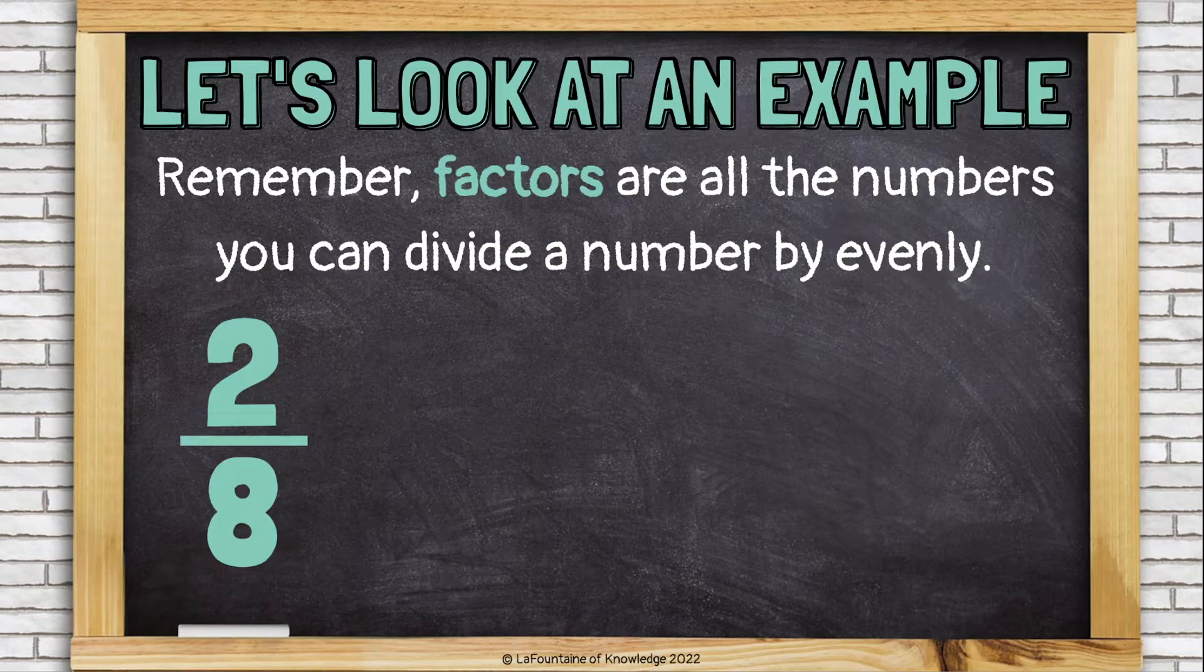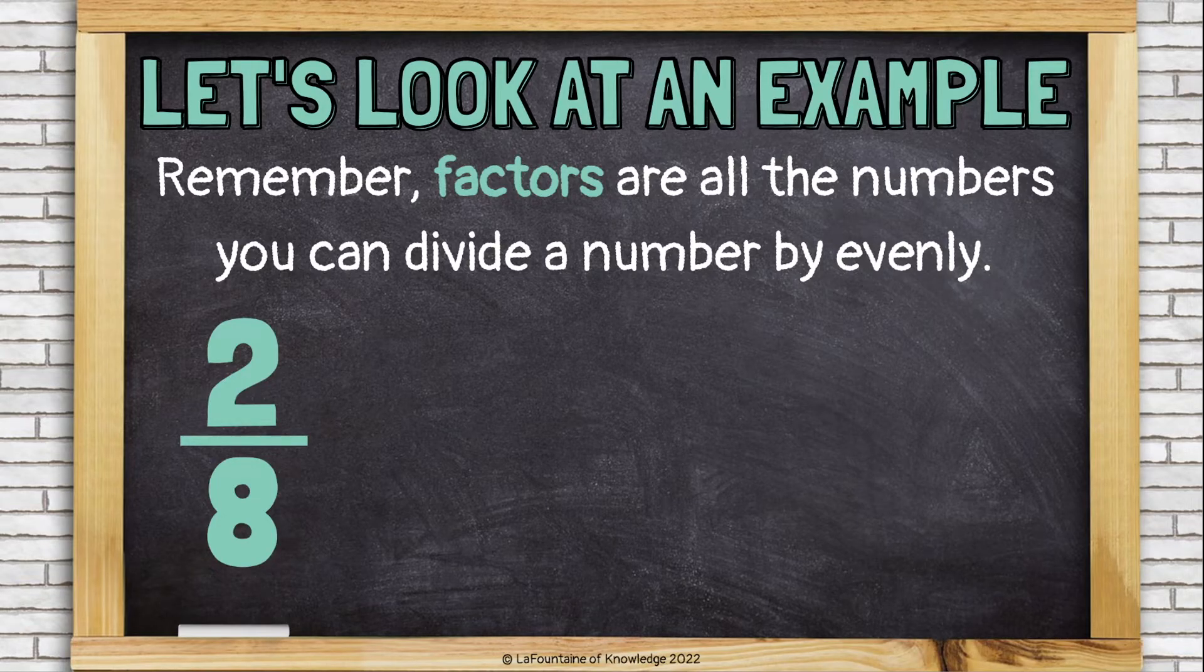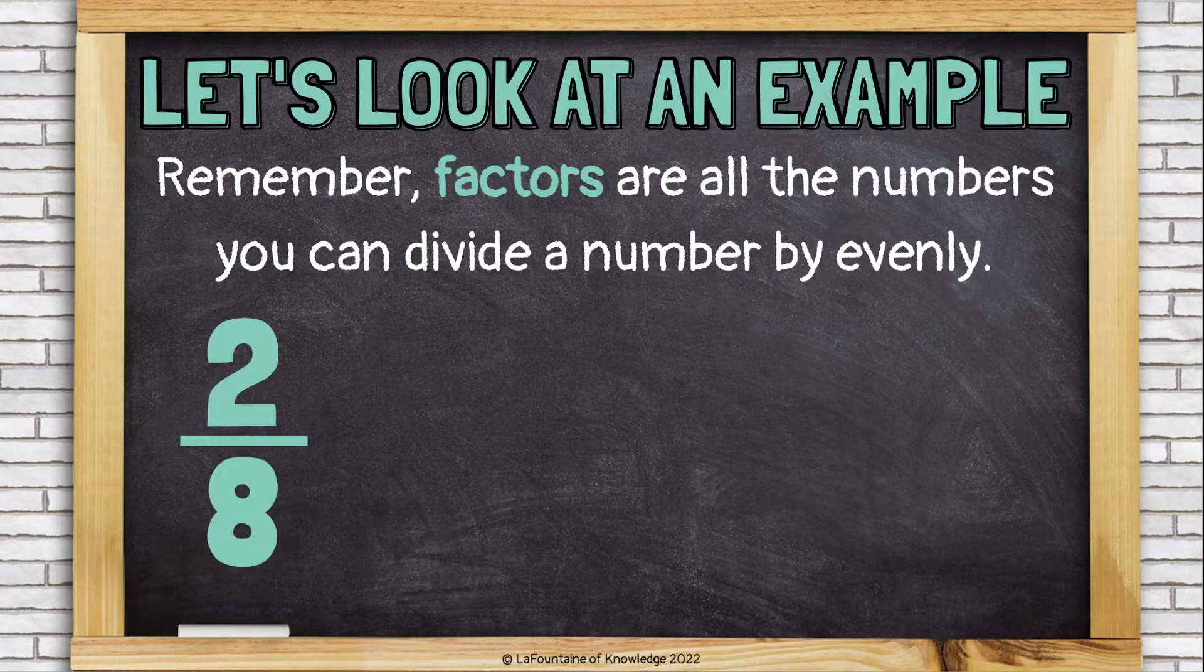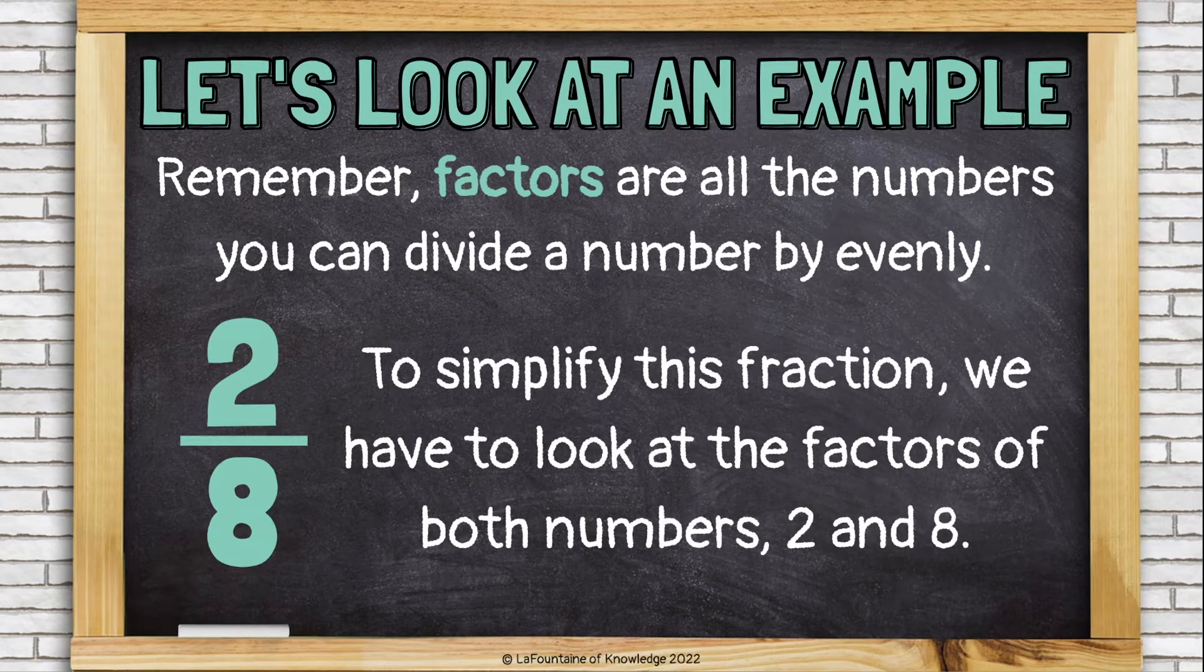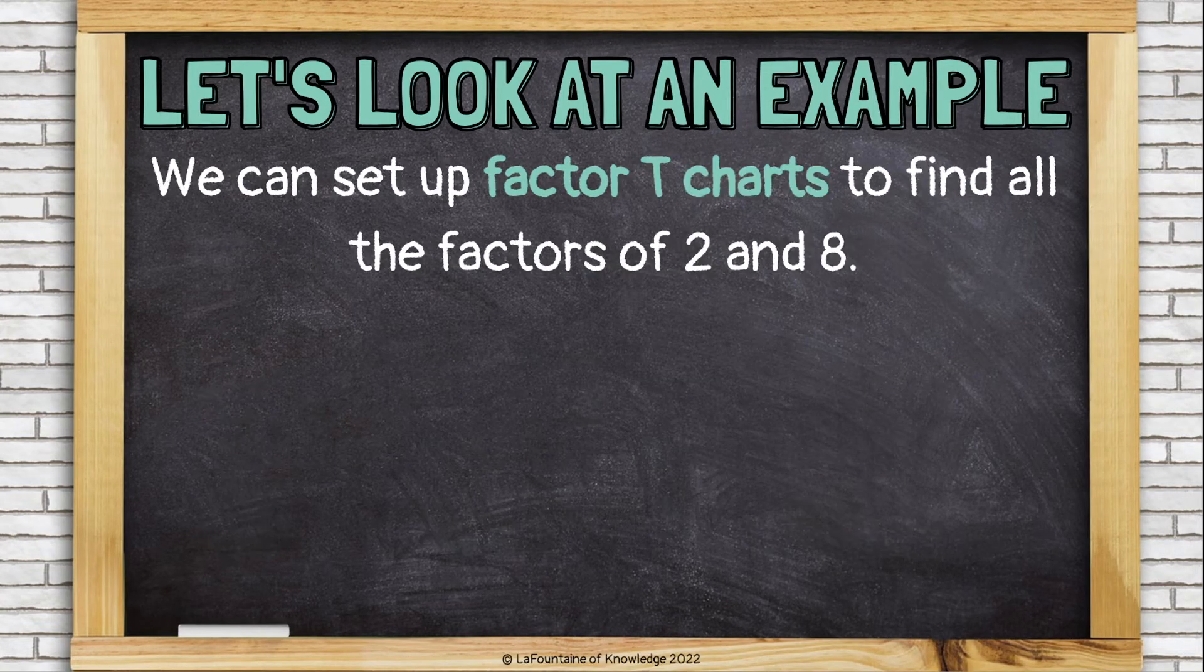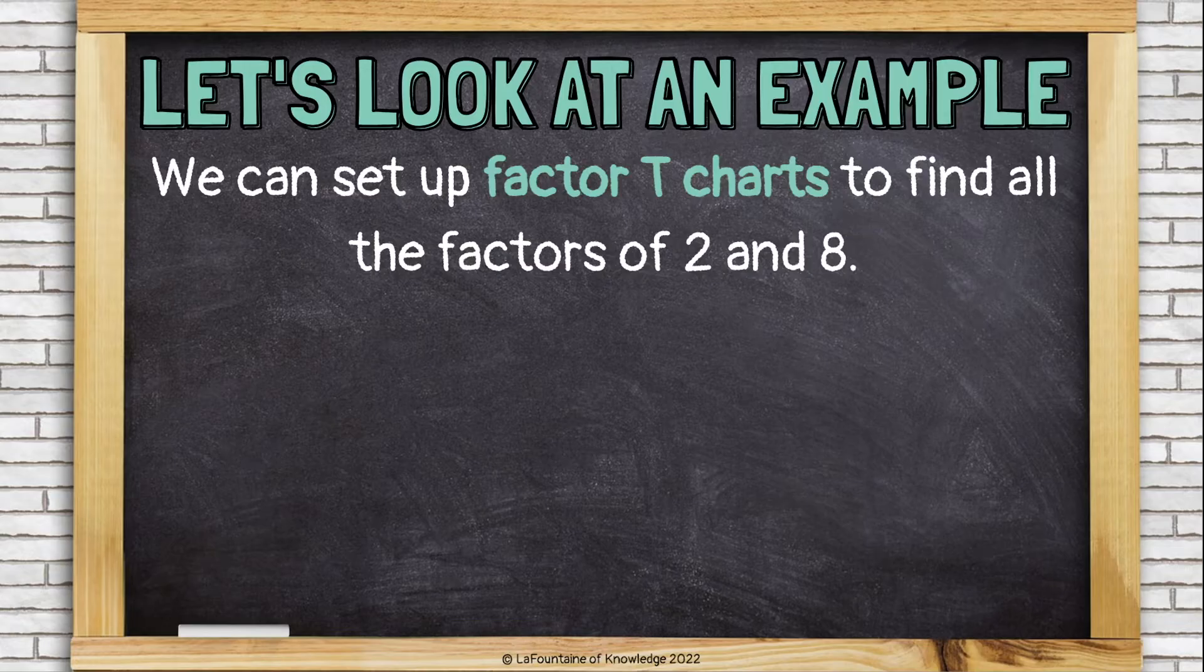So, let's look at two-eighths. We're going to try to simplify two-eighths by dividing two and eight by their greatest common factor. So, first, we need to find the factors of two and eight. We can set up factor T charts to find all the factors of two and eight.